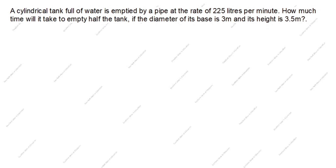In this question, a cylindrical tank is given, so first we will draw a cylindrical tank. The base diameter is given as 3 meters, so radius equals 3 by 2 meters. The height of the cylinder is also given, that is 3.5 meters. What we need to find here is how much time it will take to empty half the tank.